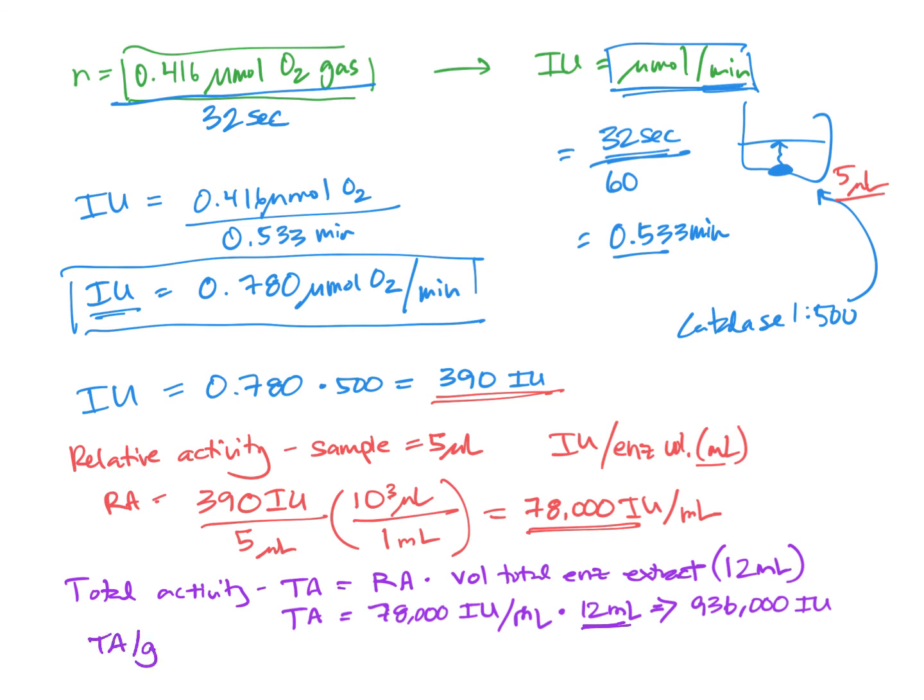So we can evaluate that by saying total activity per gram of the tissue that was used. So that's going to be 936,000 IU. And in the example we're working today, there were 5.22 grams of beef liver used. So if we multiply that out, you get 179,000 IU per gram of tissue.